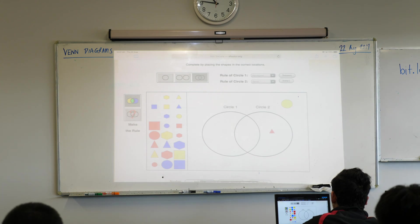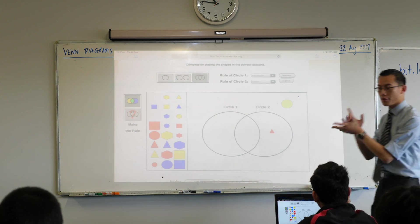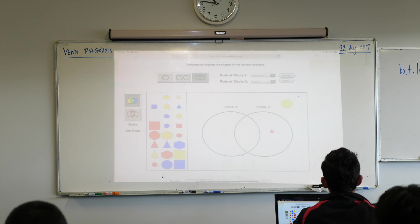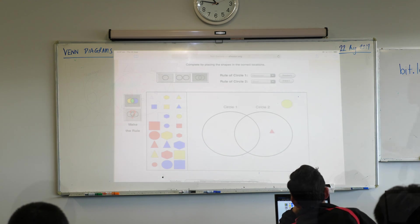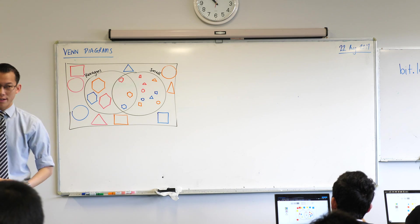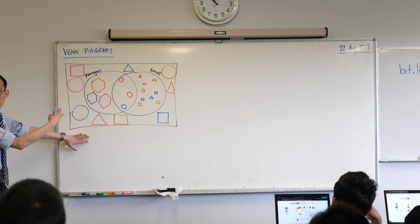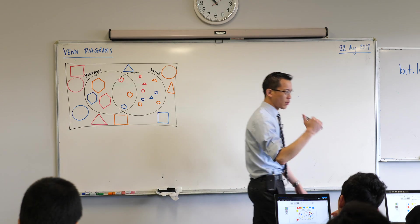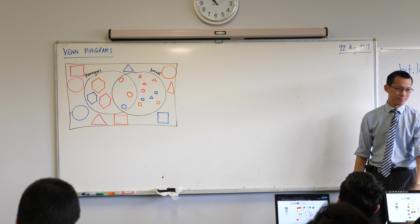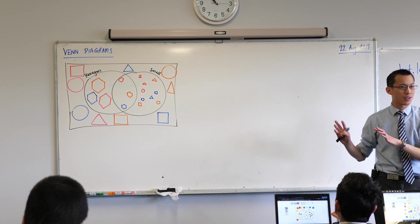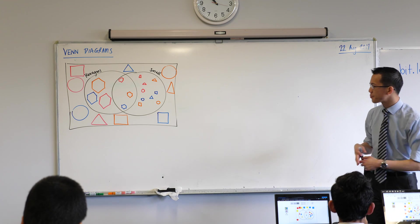Once you've put all the shapes in on the screen, draw that diagram into your book — whatever rules you chose. I've done mine; I used orange since I don't have a yellow whiteboard marker, but it doesn't matter because I didn't choose color as any of my rules.